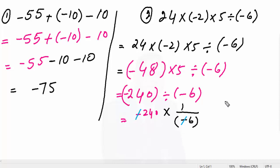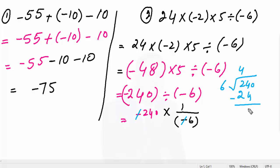The minus and minus will cancel each other out automatically. Now divide 240 by 6: 6 goes into 24 four times, remainder 0, bring down the 0, and 6 goes into 0 zero times — so the result is 40. The answer to this question is 40.